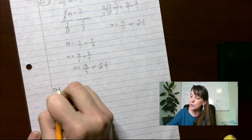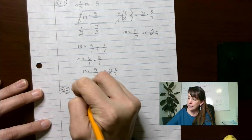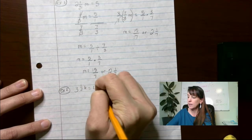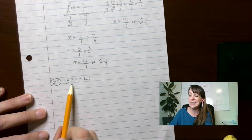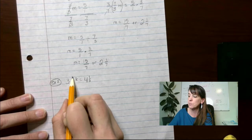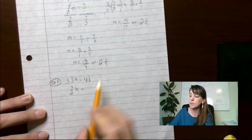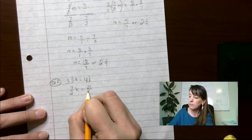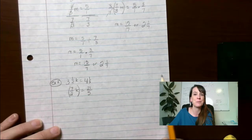Example number two. We have three and one-half k equals four and one-fifth. Three and one-half k equals four and one-fifth. Again, let's turn this into an improper fraction. Two times three is six plus one is seven. Seven two-halves k equals five times four is twenty plus one is twenty-one over five. Multiply by the reciprocal. Oh, sorry. I just jumped right into it.